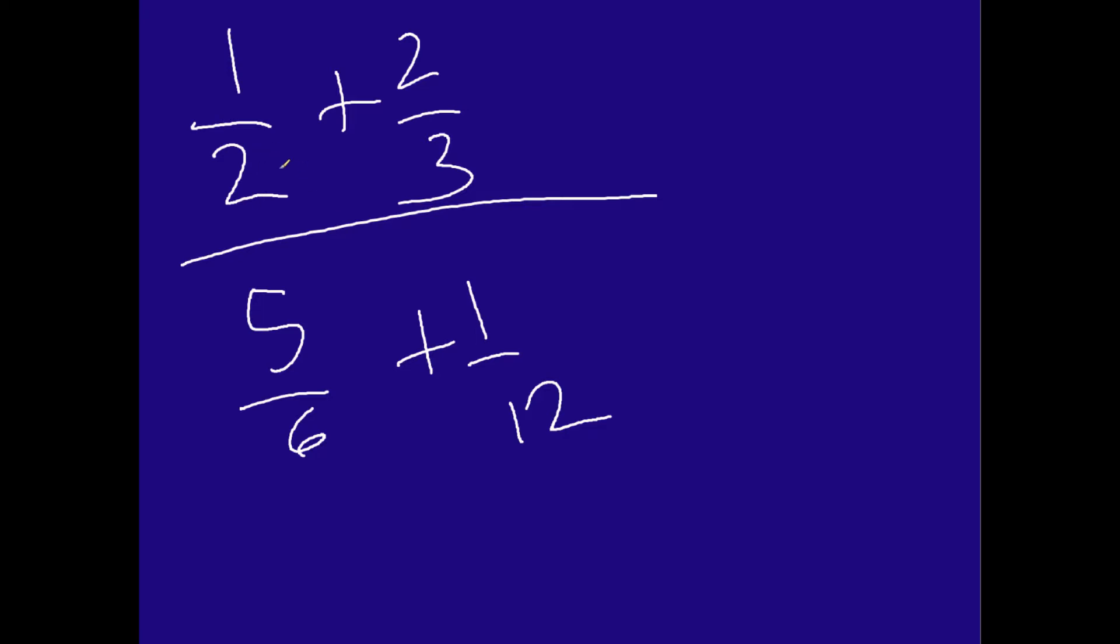So if I want to fix the 2 here and make it a 12, I have to multiply by 6. And whatever you do to the bottom, you do to the top. Now, for this denominator with a 3, I have to multiply by 4. Whatever I do to the bottom, I do to the top. And then over here, with the 6, I multiply by 2. And whatever I do to the bottom, I do to the top.